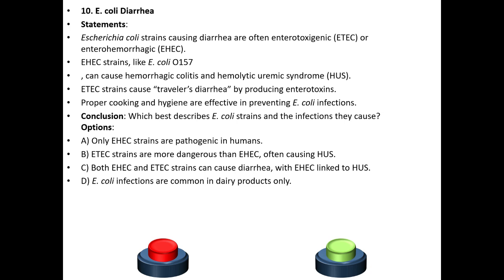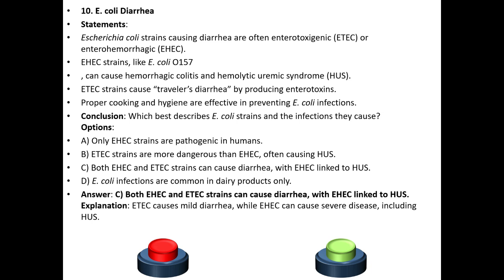Conclusion: Which best describes E. coli strains and the infections they cause? Option A: Only EHEC strains are pathogenic in humans. Option B: ETEC strains are more dangerous than EHEC, often causing HUS (hemolytic uremic syndrome). Option C: Both EHEC and ETEC strains can cause diarrhea, with EHEC linked to HUS. Option D: E. coli infections are common in dairy products only. The answer is C. Explanation: ETEC causes mild diarrhea while EHEC can cause severe disease including HUS.